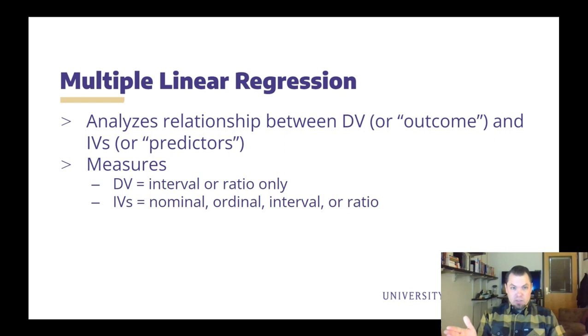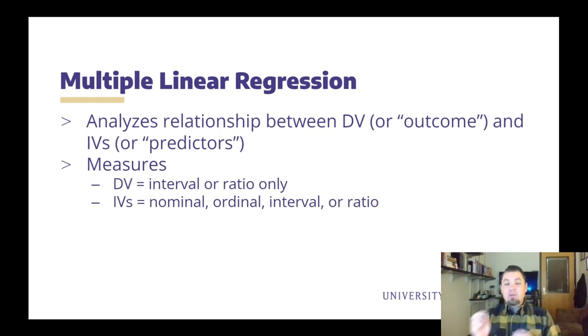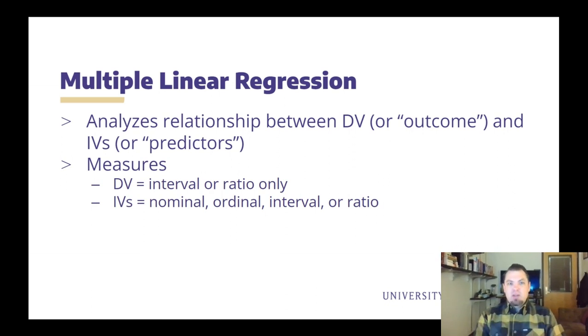What kind of variables can we use for regression? For regression, our dependent variable needs to be measured as an interval or ratio type of variable, but our independent variables can be measured really with any type of variable: nominal, ordinal, interval, or ratio types of variables.